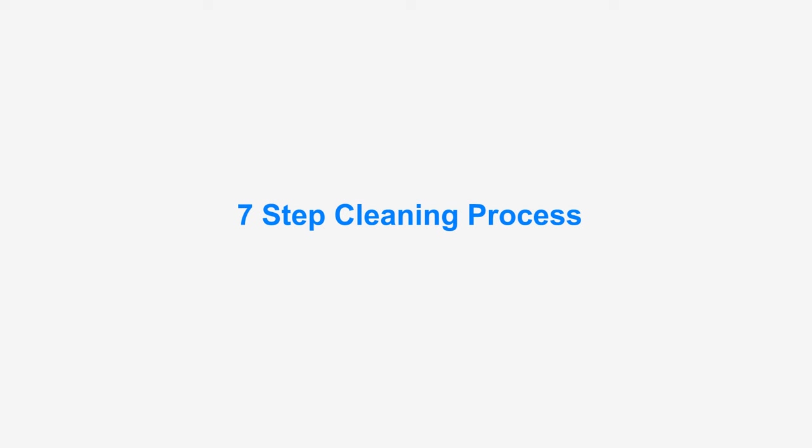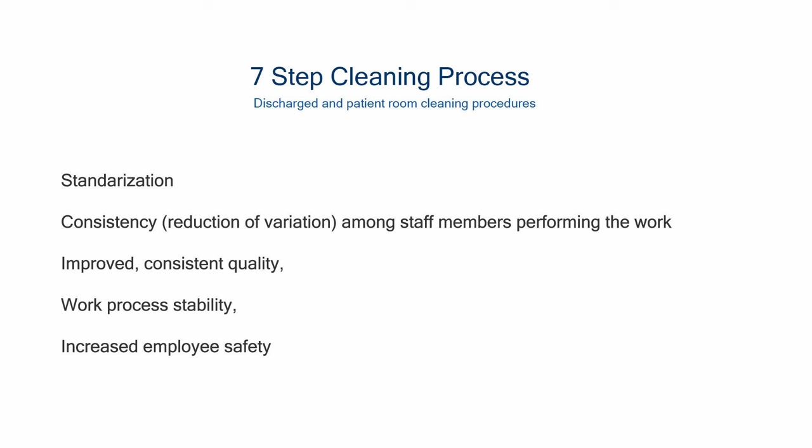7-Step Cleaning Process. This is a standard method for cleaning all areas unless otherwise specified. The 7-Step Cleaning Process is designed to maintain the highest standard of EVS cleanliness. This procedure can be used as a reference or checklist and is not intended to imply that all of these steps must be completed for each cleaning. We will review the following steps on this video.